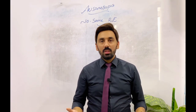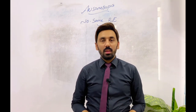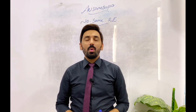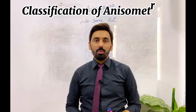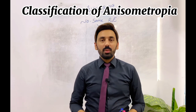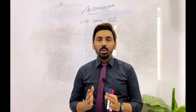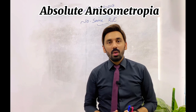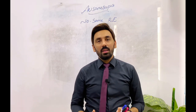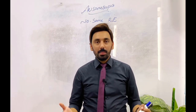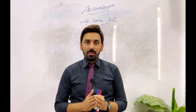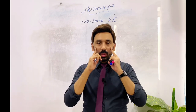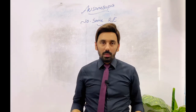Now we will discuss the different classifications of anisometropia. The first classification is called absolute anisometropia. In absolute anisometropia, the refraction — the prescription or power — of both eyes is unequal.